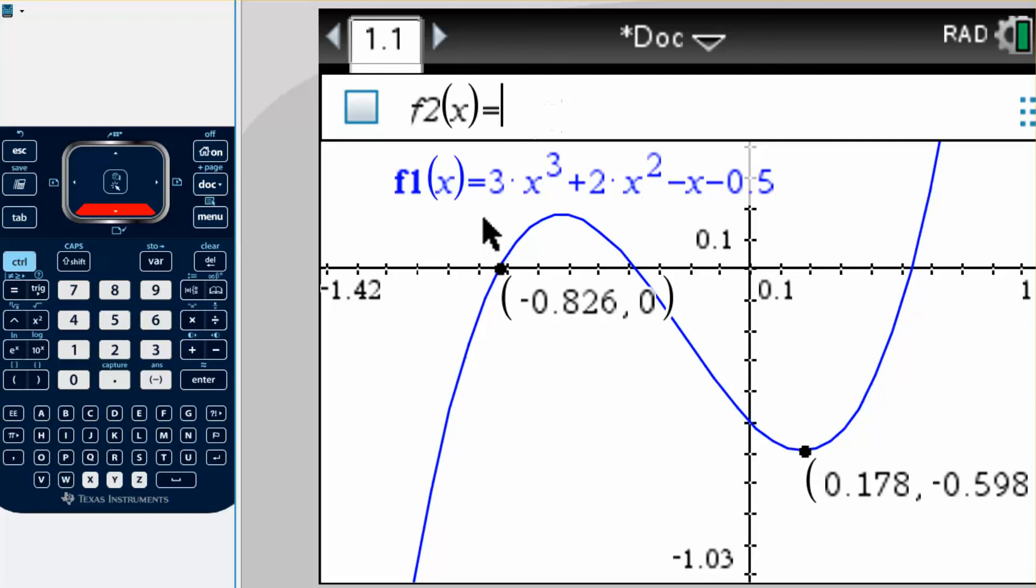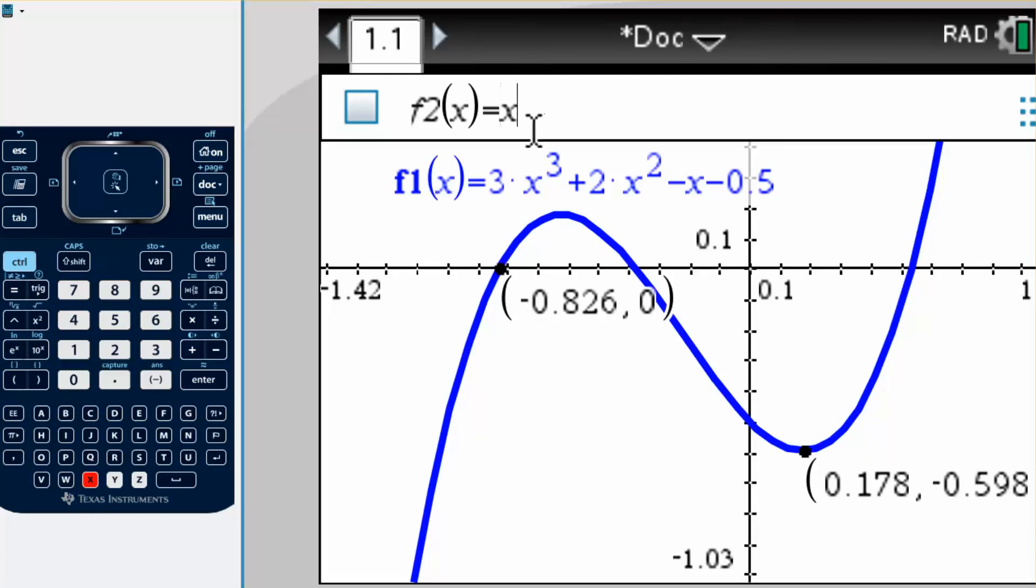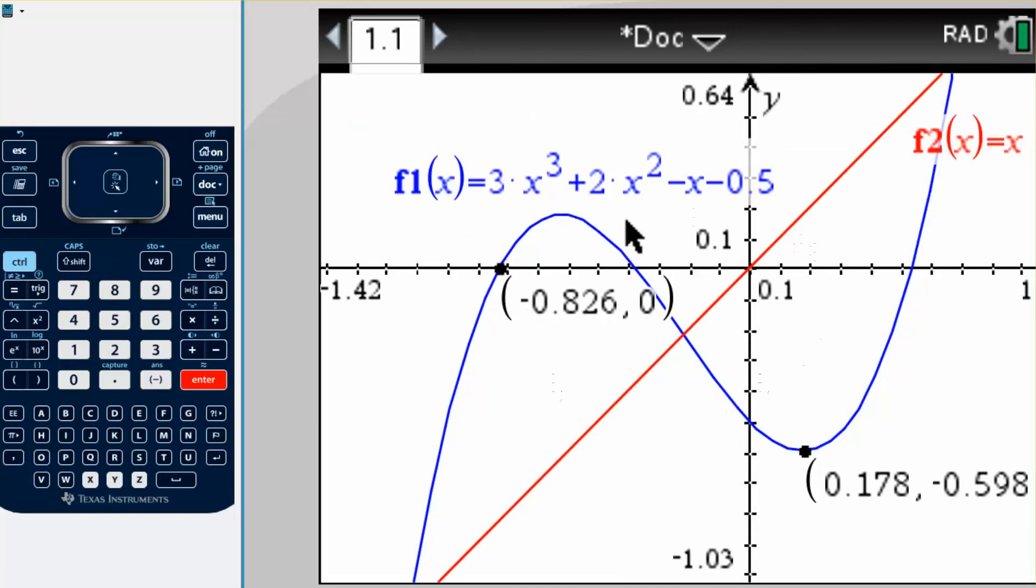So let's just make f2 equal to, let's say, x. So if we do that, now we have two different graphs on this one graph.